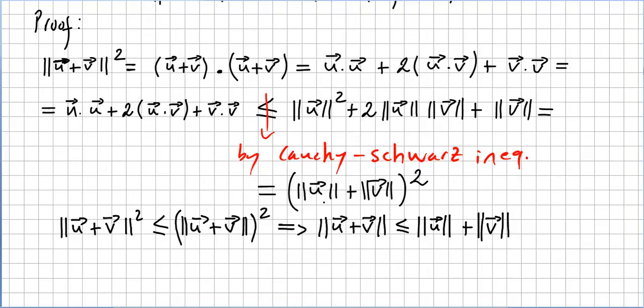So this is (||u|| + ||v||)². So what we have is ||u+v||² is less or equal - we used the Cauchy-Schwarz inequality, please check the previous video for that - to (||u|| + ||v||)². Now you take square roots on both sides